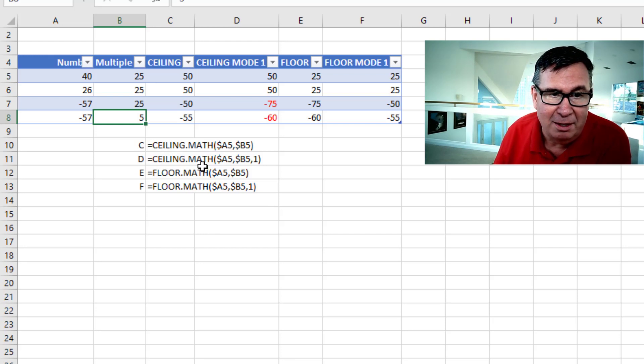Ceiling.Math. Ceiling.Math with a mode of one. Floor.Math. Floor.Math with a mode of one. And the question is, can we replicate those in Power Query?